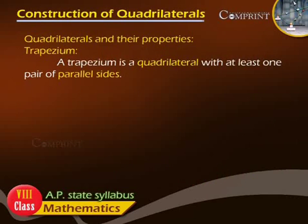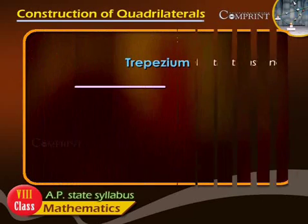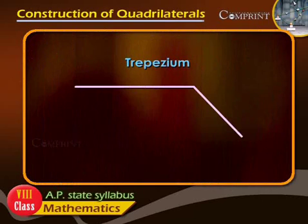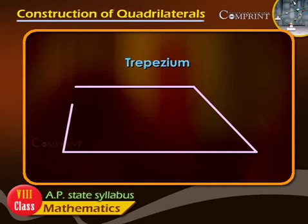A trapezoid is a quadrilateral with at least one pair of parallel sides.